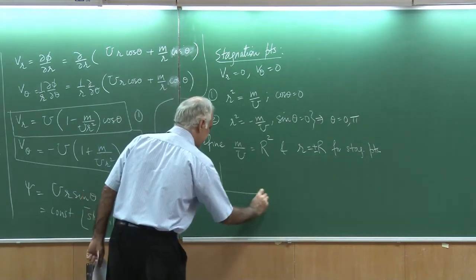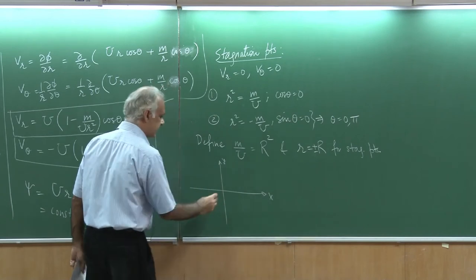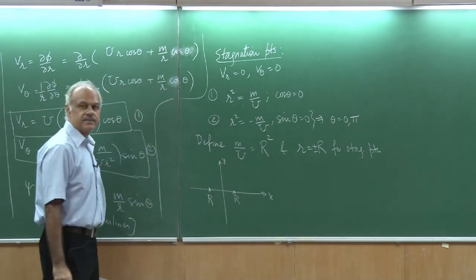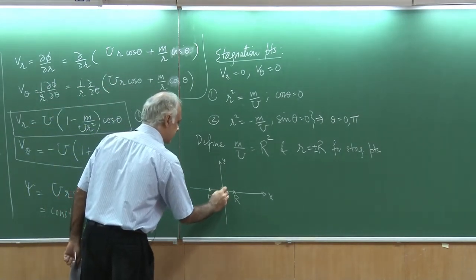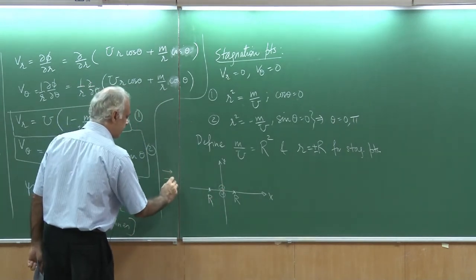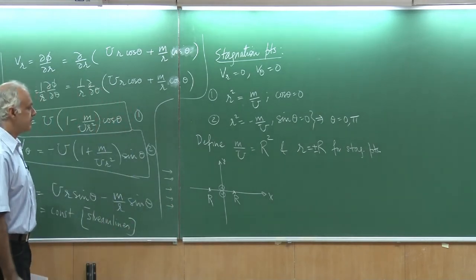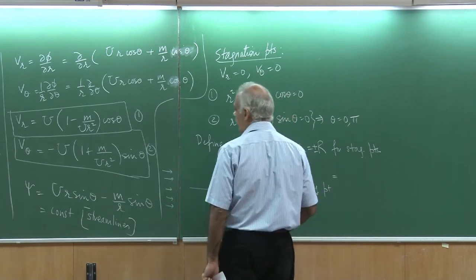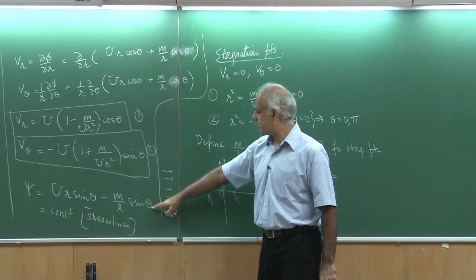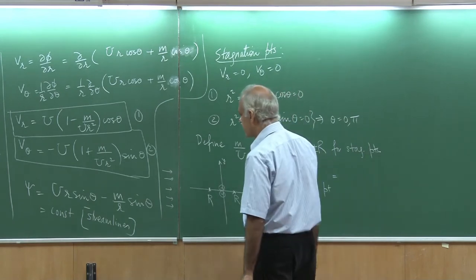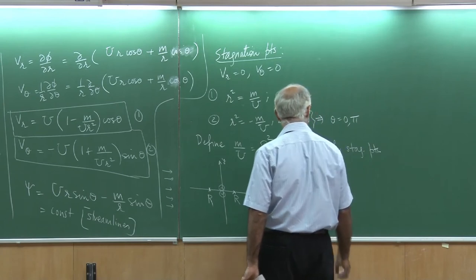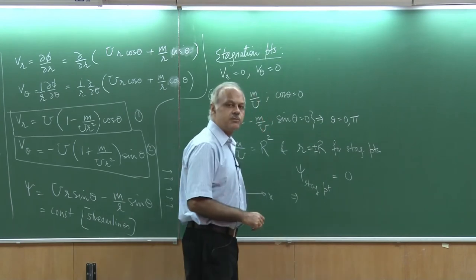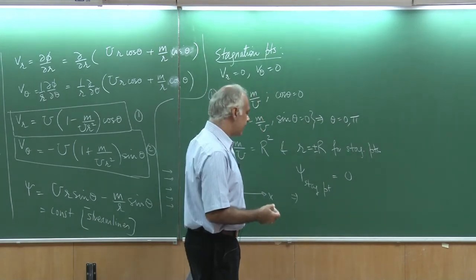Essentially, if I draw the x and y axes, there are two stagnation points located at r equals capital R, and there is a doublet at the origin with a uniform flow coming in. Calculating psi at the stagnation point — substituting r equals capital R and theta equals 0 — I see that the stream function goes to 0. This means the streamline that passes through the stagnation point corresponds to psi equals 0, which we call the stagnation streamline.